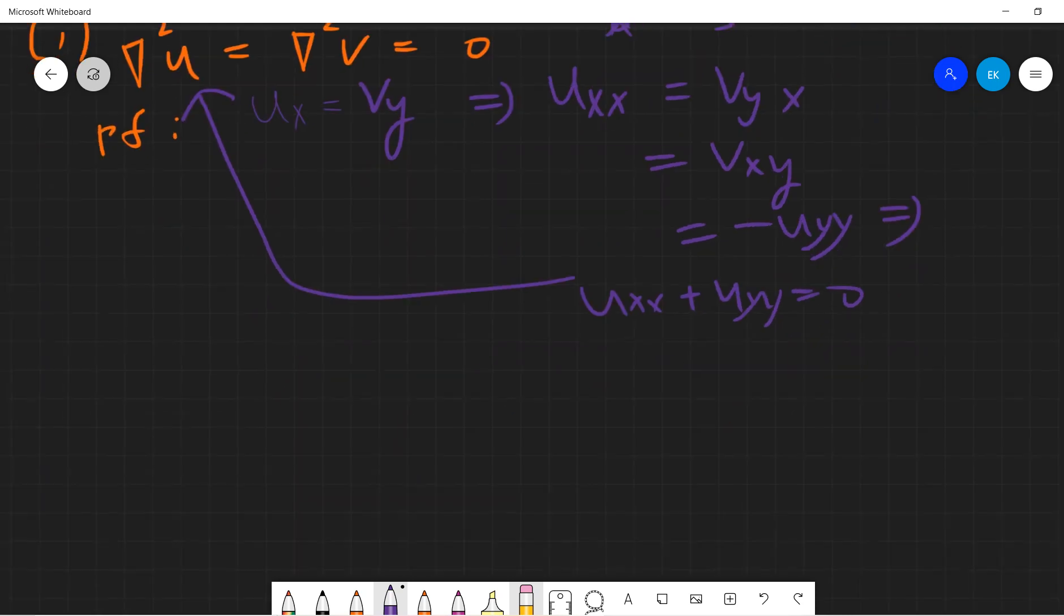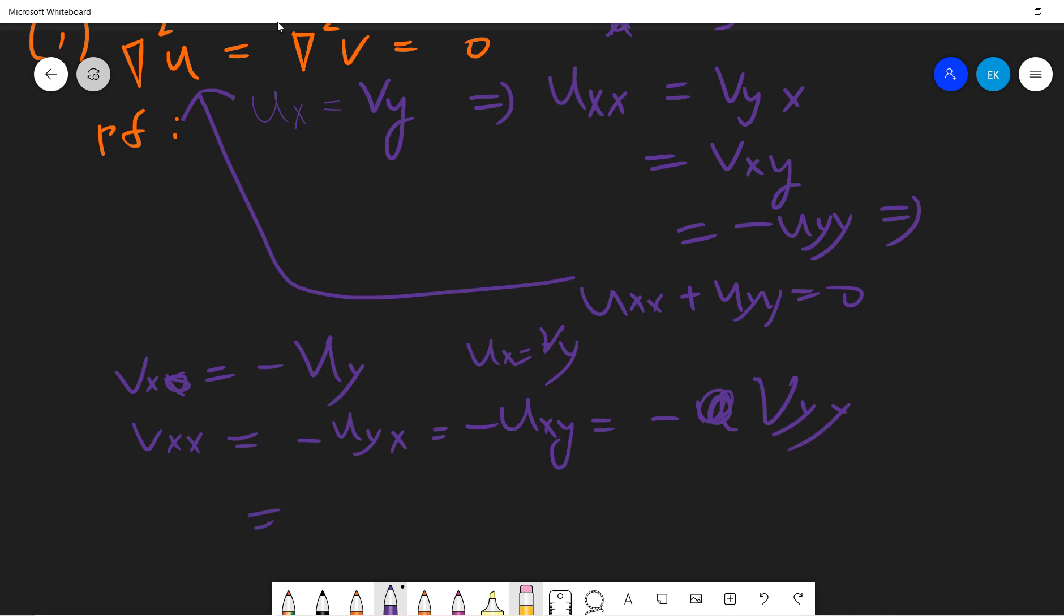Similarly, vx equals minus uy, so vxx equals minus uyx, which equals minus uxy. Since ux is vy, this is minus vyy. Therefore vxx plus vyy is zero.